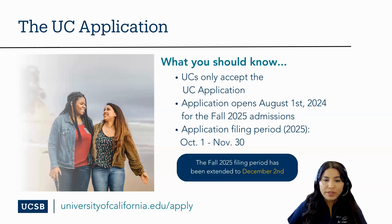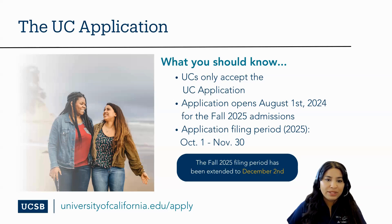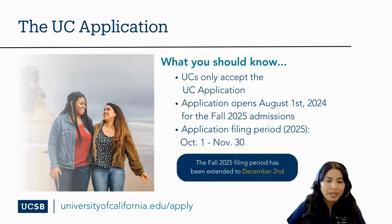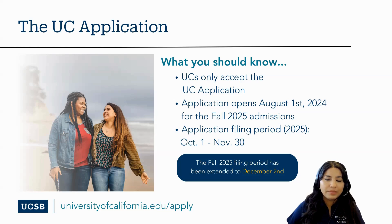What you should know about applying to the University of California is that the UC application is the only application that the University of California will accept for admission. The application is only available online at universityofcalifornia.edu/apply. The UC application opens on August 1st; however, applications may only be submitted during the fall application filing period between October 1st through November 30th. The fall 2025 filing period has been extended to December 2nd. Applications are not reviewed on a first-come or first-served basis.